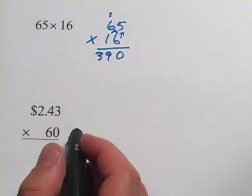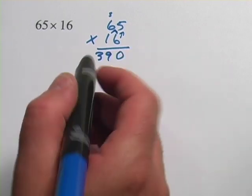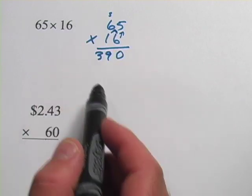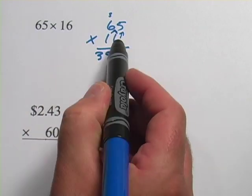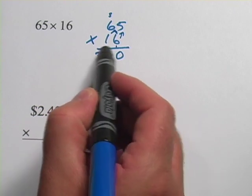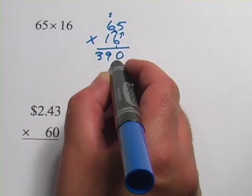That all goes down here. If we had more numbers to go, I would have just put the 9 down and carried the 3, but we didn't have any more, so I put them all down here. Now we're done with the 6. We move on to the 1, and because this 1 is in the tens digit, we actually start on a second line here.